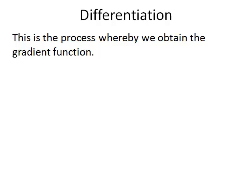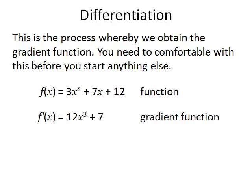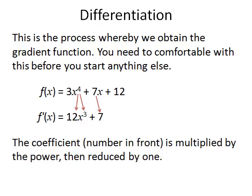And we find our gradient by our gradient function, which we find by differentiating. That's the primary skill and you can't do anything else before you're good at that. We take our function, some polynomial of x, and we use that to find our gradient function. And the way that we do that is we take each of the powers and multiply them by the coefficient in front and then reduce the power by 1.